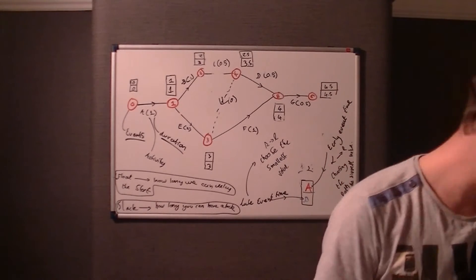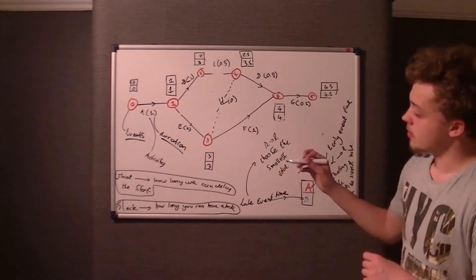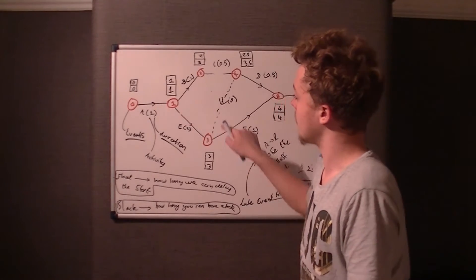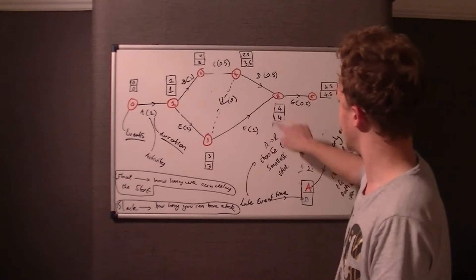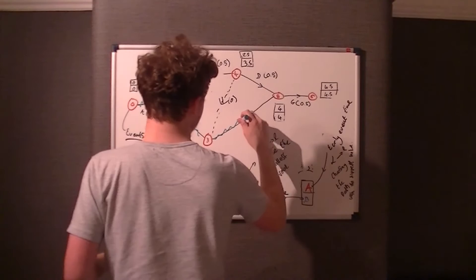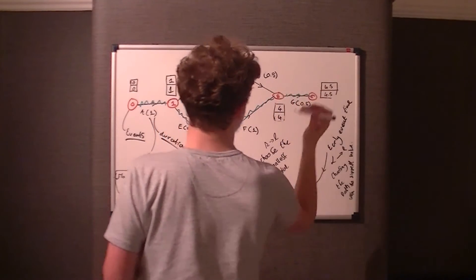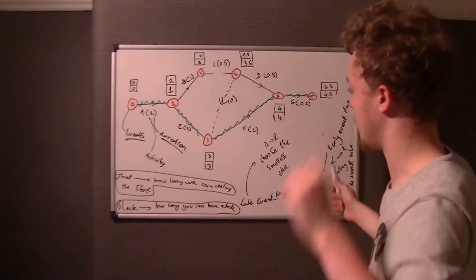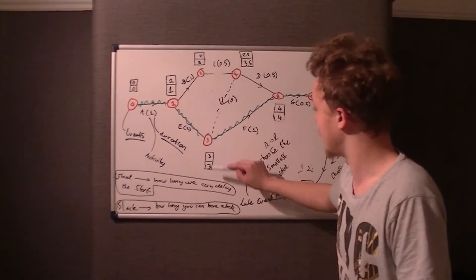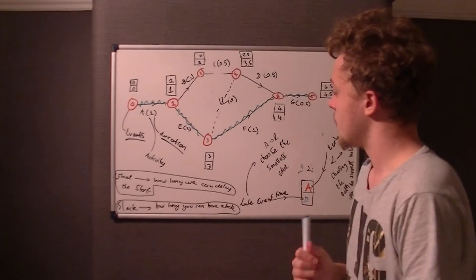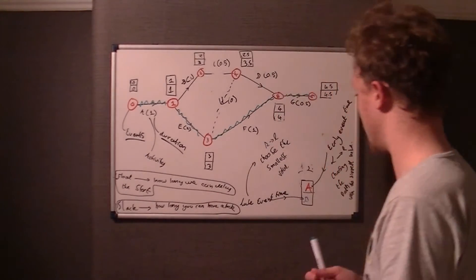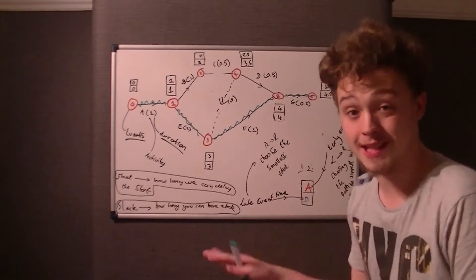From this we can identify the critical events and critical activities. The critical activities are those where the numbers are the same: 1|1, 0|0, 3|3, 4|4, and 4.5|4.5. I'll colour the route in green — that's the critical path, joining up all activities where the start and end node have matching Early and Late Event Times.